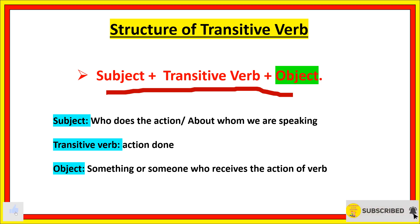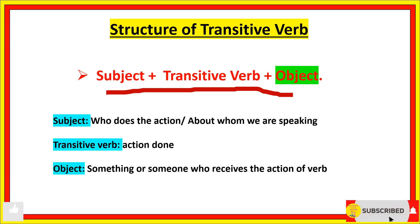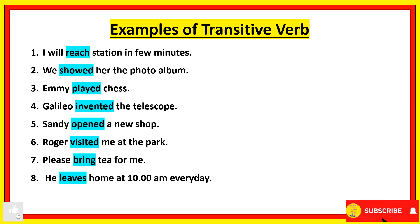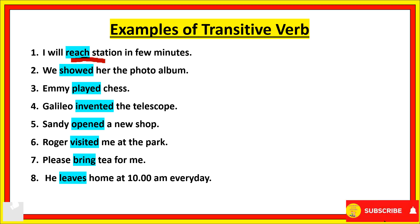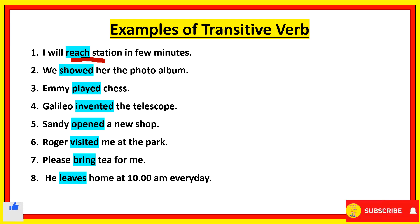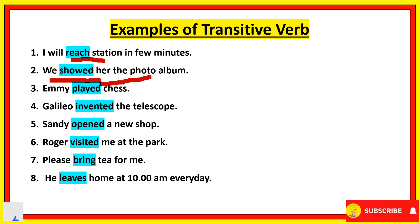Subject means who does the action or about whom we are speaking. The transitive verb is the action done, and the object means something that is receiving the action of the verb. For example: 'I will reach the station in a few minutes.' Here 'reach' is a transitive verb because it is followed by the noun 'station,' and station is receiving the action of reaching.